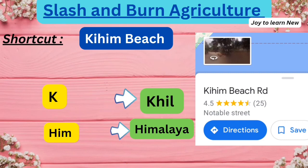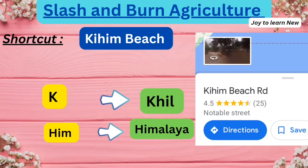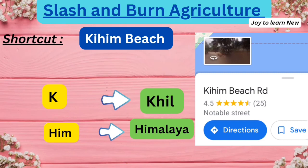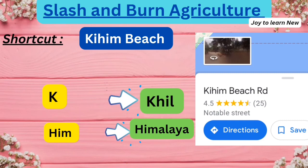The next shortcut is 'He Him Beach,' which is a beach in Maharashtra. K refers to Hill, and Him refers to the Himalayan belt. So Hill is the name for slash and burn agriculture in the Himalayan belt.